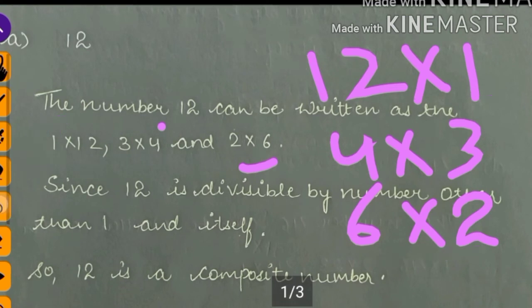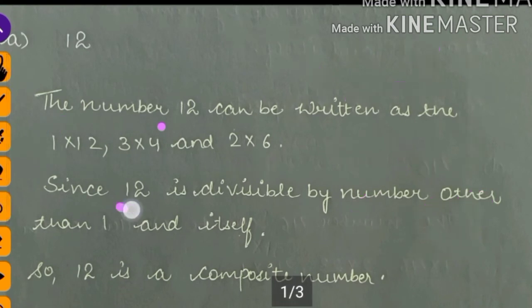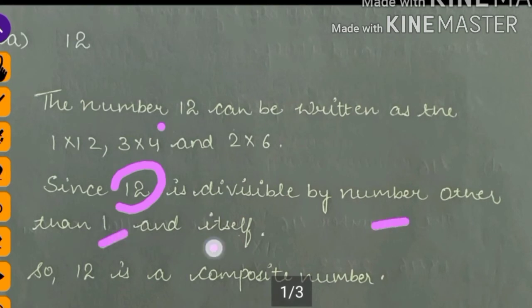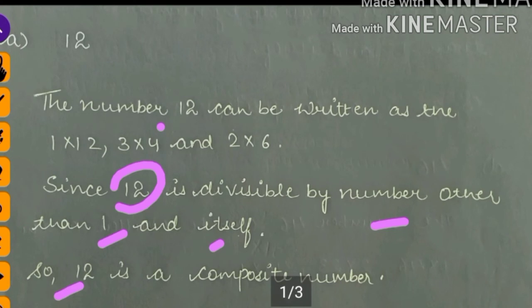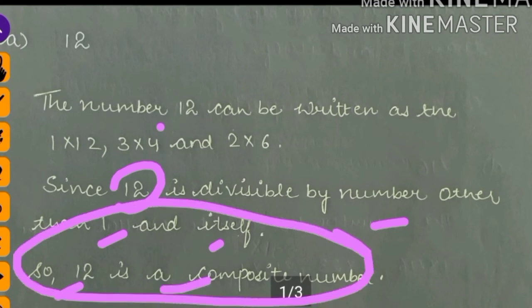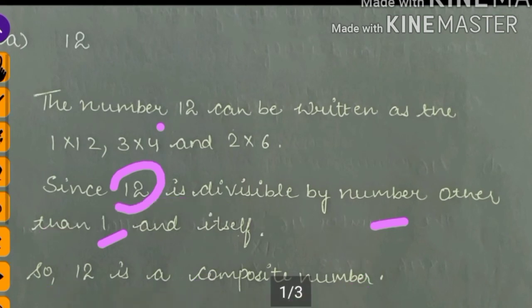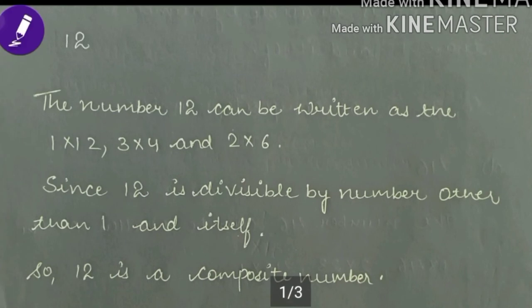I think you all understood. Since 12 is divisible by numbers other than 1 and itself, 12 is a composite number. Is that clear?